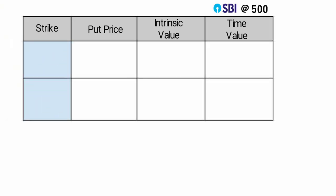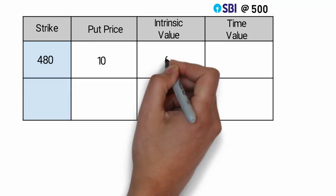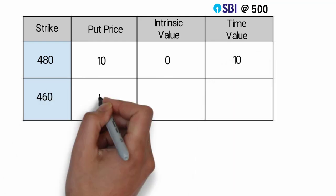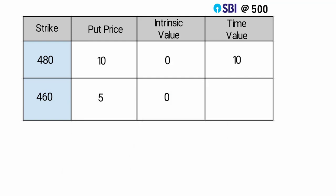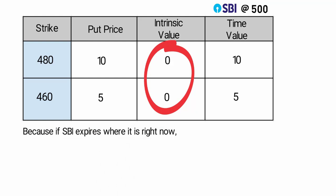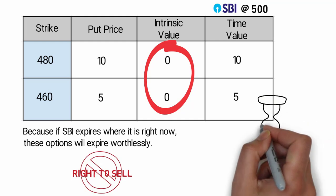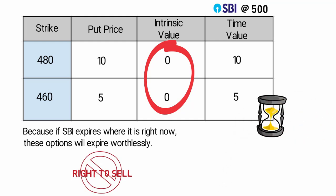Now let's see some other strikes. Strike 480 put option price is 10 rupees — intrinsic value is 0 and time value is 10 rupees. The above strikes have zero intrinsic value. Because if SBI expires at 500, these options will expire worthless — you will not exercise your right to sell SBI at 480 or 460. That's why they only have time value — the hope that SBI might go down in future.